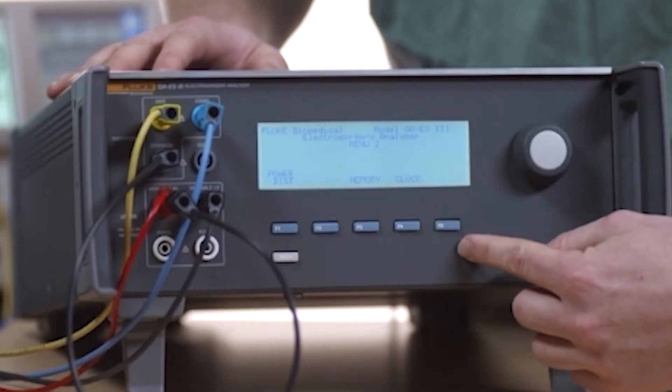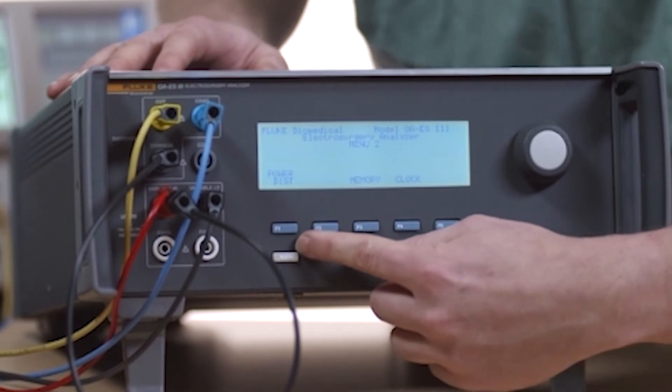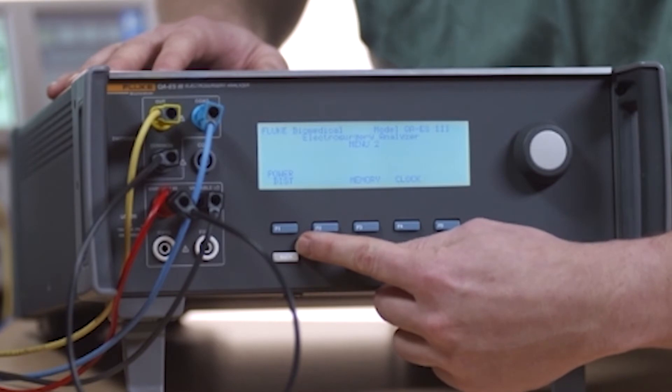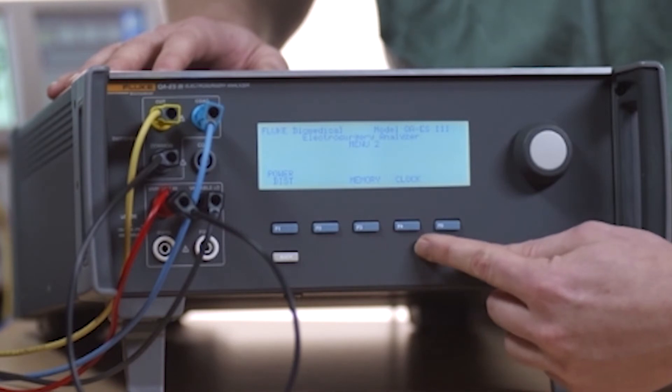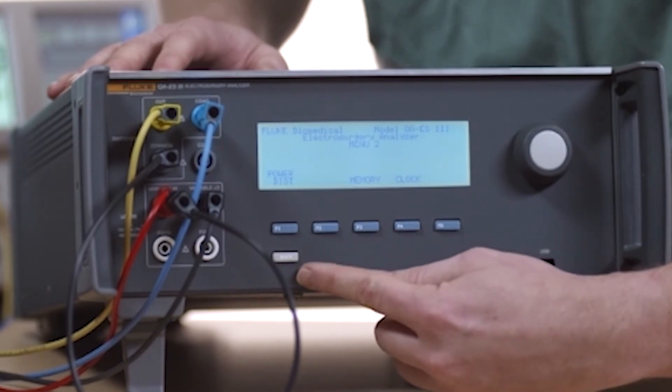From this menu, you can test power distribution, which is useful for evaluating the performance of the output guarantee functionality in some newer ESUs. This menu also lets you access the memory and set the clock. Use the back key to return to menu 1.